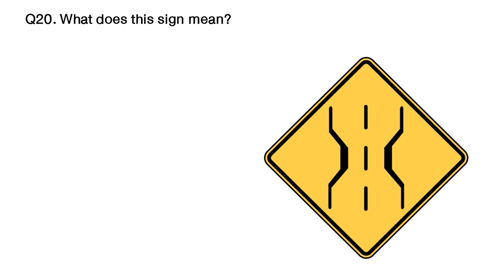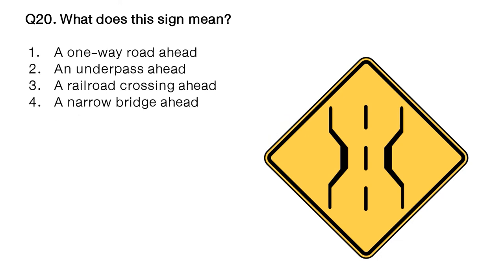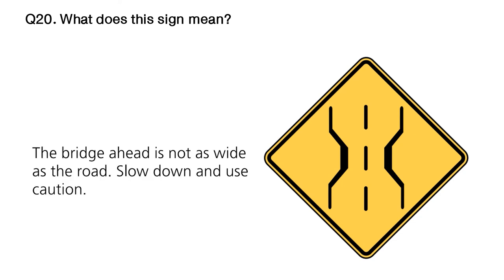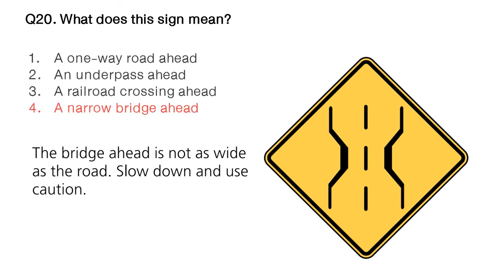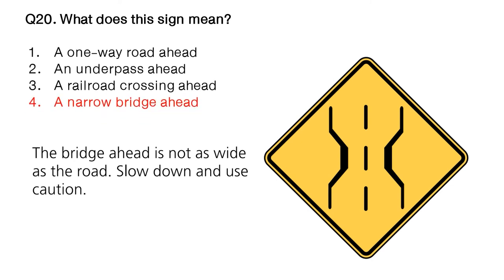Question: what does this sign mean? Option number 1: a one-way road ahead. Option number 2: an underpass ahead. Option number 3: a railroad crossing ahead. Option number 4: a narrow bridge ahead. The answer is option number 4: a narrow bridge ahead. Note: the bridge ahead is not as wide as the road. Slow down and use caution.